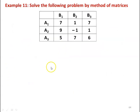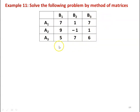We take another example to understand the matrix method — example number 11: solve the following problem by the method of matrices. We have three strategies for both player A and player B. A1, A2, A3 are the strategies for player A; B1, B2, B3 for player B. The payoff matrix values are: row A1: 7, 1, 7; row A2: 9, −1, 1; row A3: 5, 7, 6.